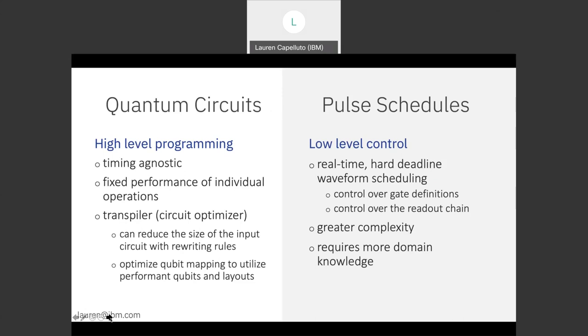The circuit optimizer, which we call our transpiler at IBM, is mainly responsible for reducing the overall size of the input circuit to improve the performance of that circuit. It can also reduce the number of higher error two qubit operations.